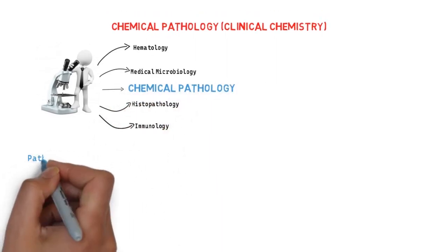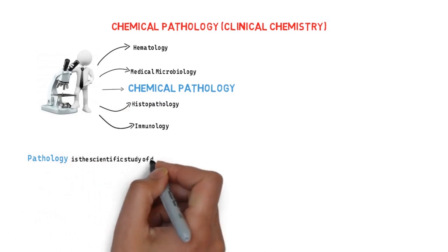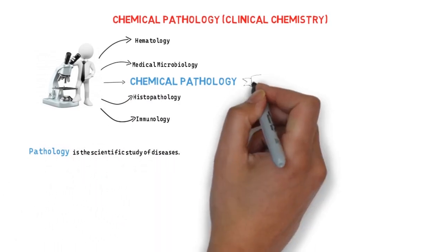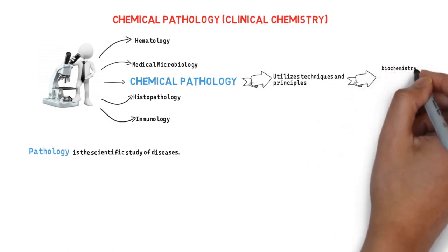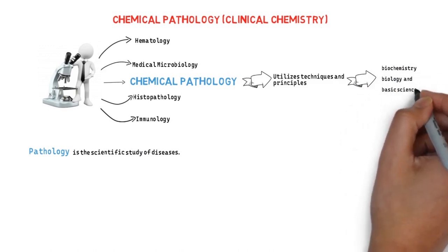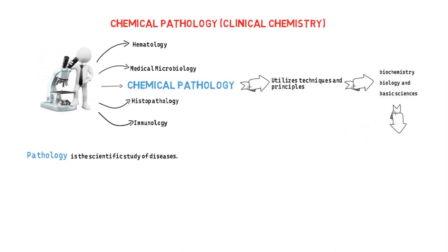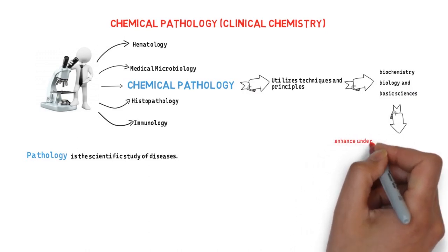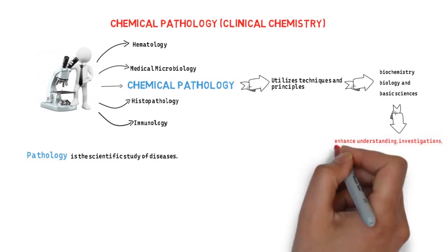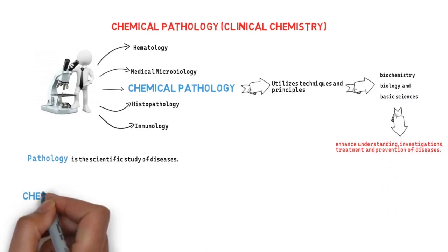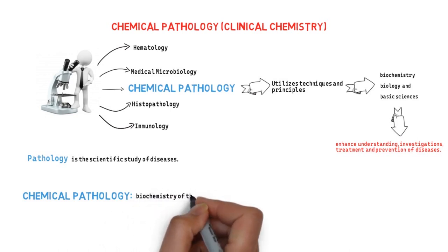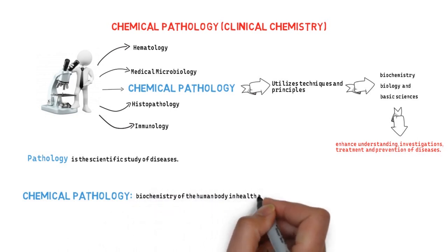Generally, pathology is the scientific study of diseases, and chemical pathology is a branch of pathology that utilizes techniques and principles of biochemistry, biology, and basic sciences to enhance the understanding, investigation, treatment, and prevention of diseases. You can simply say chemical pathology is the biochemistry of the human body in a health and a disease state.